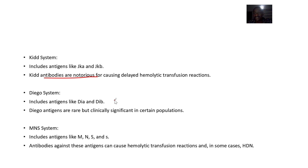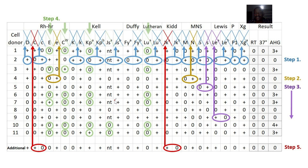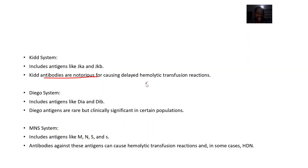Then we have the Diego system, which includes antigens DIA and DIB. Diego antigens are rare but clinically significant, and are more commonly found in certain populations.